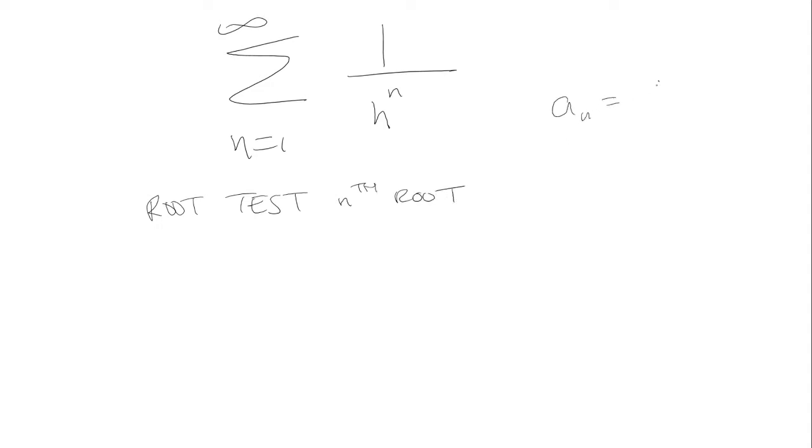So a sub n is 1 over n to the nth power. We're going to be taking the nth root of that, which will eliminate the nth power. So now we can instead write the limit as n approaches infinity of 1 over n. And we know that this is 0.